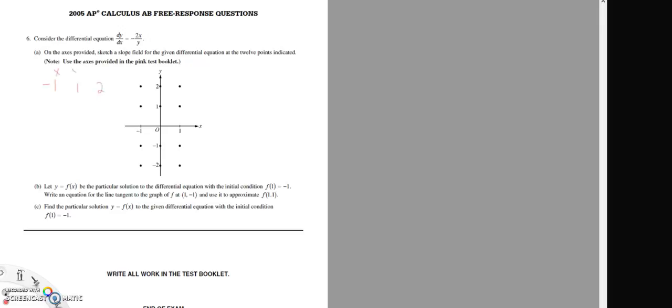So this is x, this is y, this is m, 2. If you plug in negative 1, 2, you're going to get negative 2 over 2, which is 1. So 1, 1, 1, 1. So 1 should look about like this.